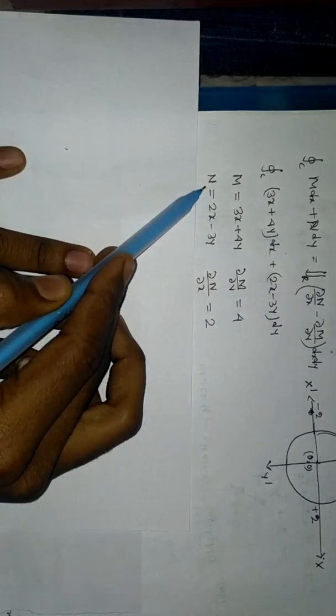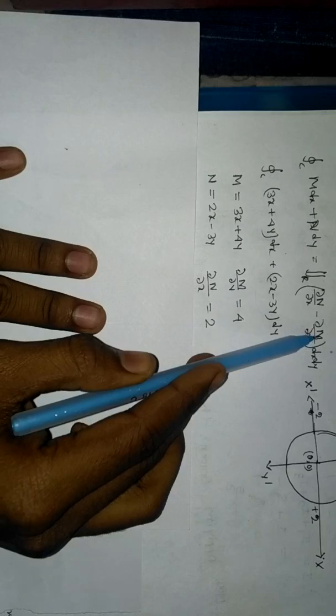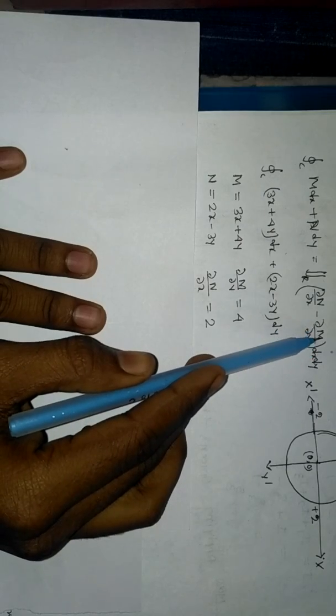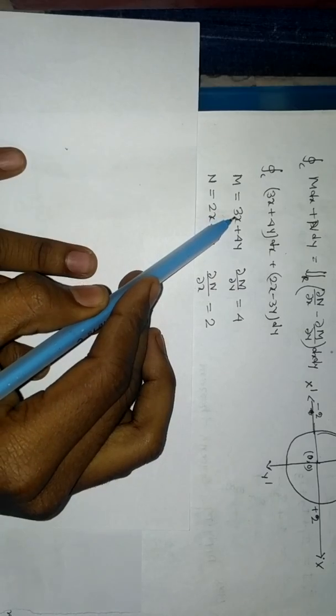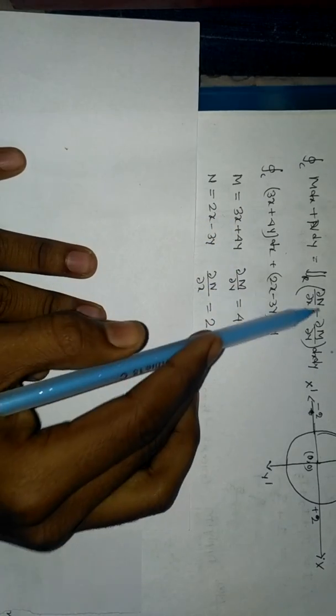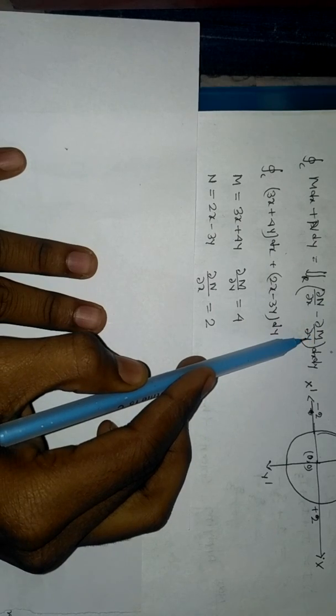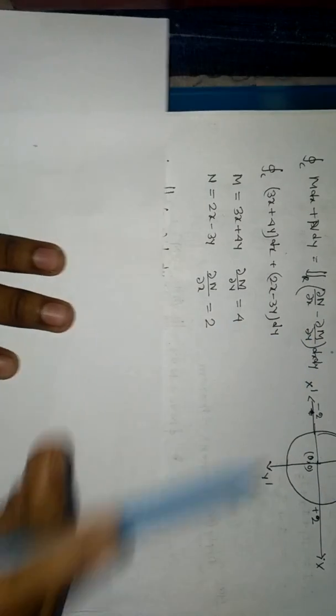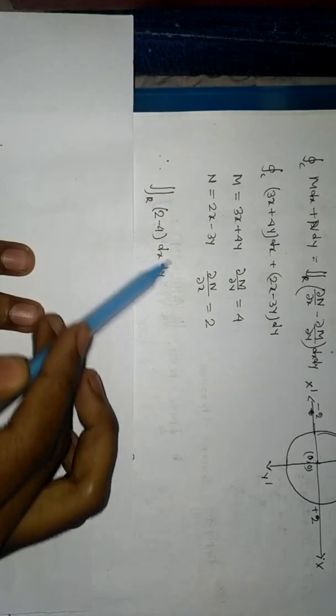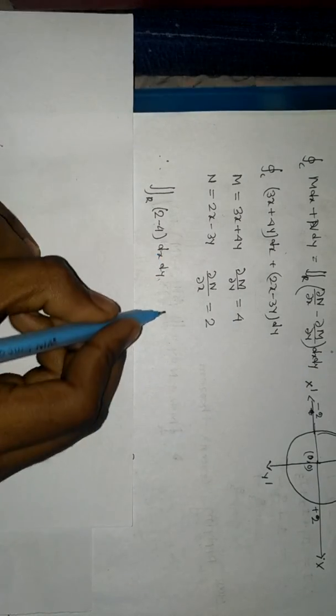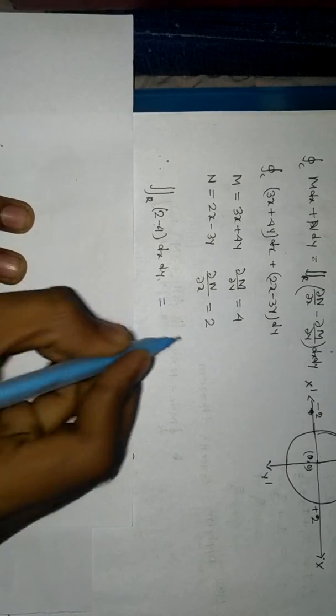Del N del X, the partial derivative of N with respect to X, equals 2. Del M del Y, the partial derivative of M with respect to Y, equals 4. Now del N del X minus del M del Y equals 2 minus 4, which is minus 2 dx dy.